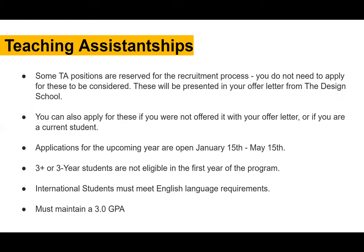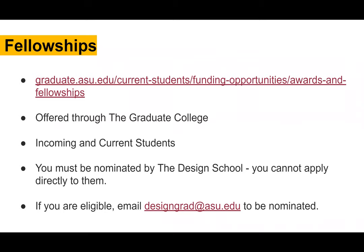There are specific English language requirements to be a TA. The Teaching Assistant portal link is where you will find all those requirements — you must meet English proficiency requirements to be eligible and maintain a 3.0 GPA. Another way of funding is through fellowships. You can see the link at the top. These are offered through the Graduate College and are for both incoming and current students. You must be nominated by the design school, so you can't apply directly. If you're eligible, go to the link, search through to see which ones you qualify for, then email designgrad@asu.edu to let us know you'd like to be nominated.